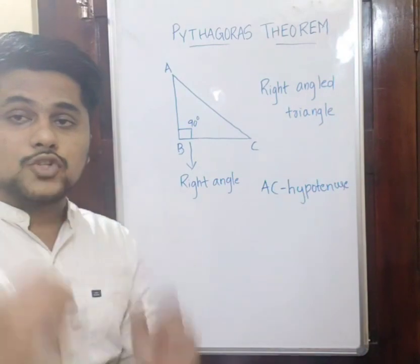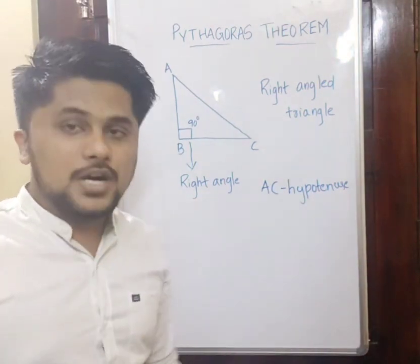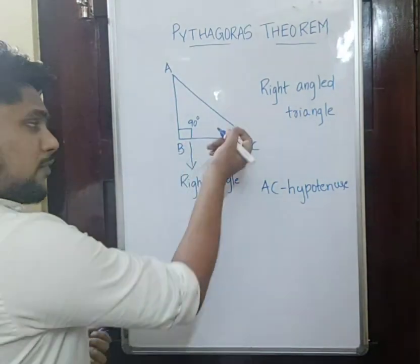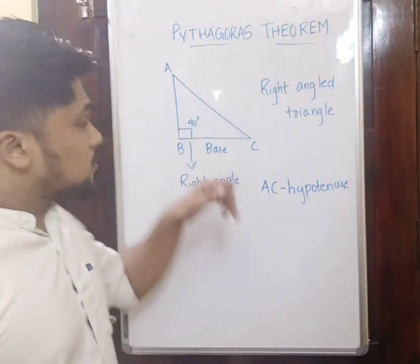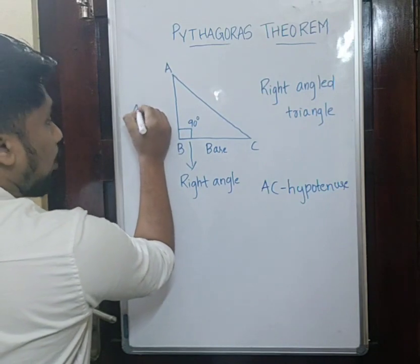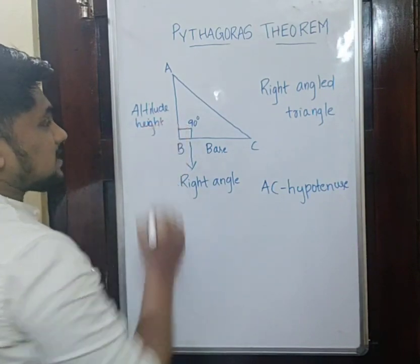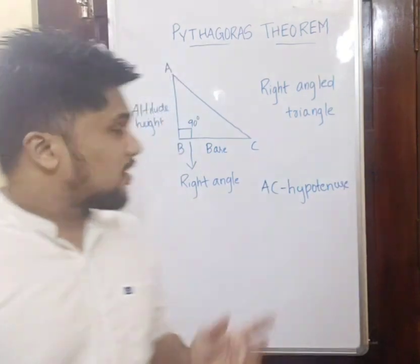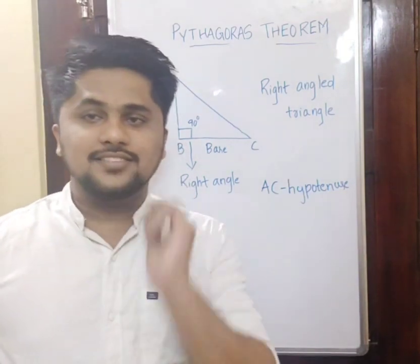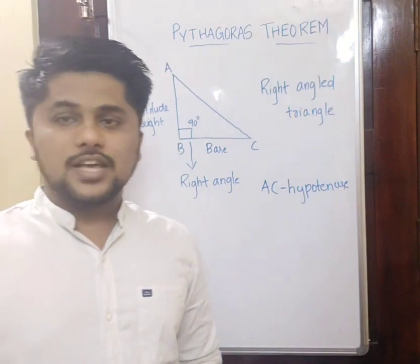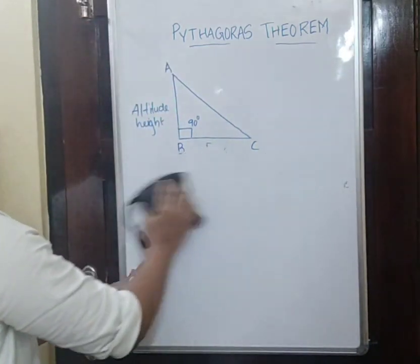Other than the hypotenuse, we have two sides. The speciality of these two sides is that they are perpendicular to each other. We give the name 'base' to one of them — we can also tilt the triangle, so either side can be the base. The other we call 'altitude' or 'height'. So we have base, altitude or height, and hypotenuse — and by connecting these three sides we have the Pythagoras theorem.